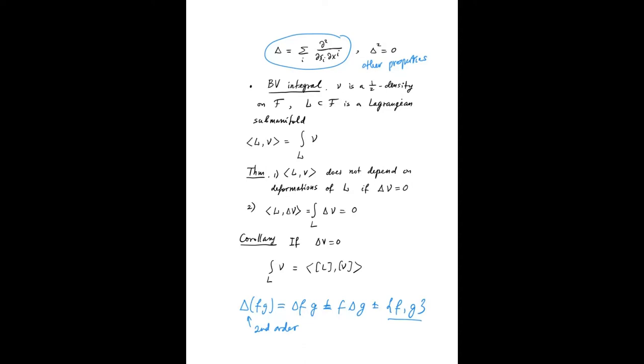Now the definition of the BV integral. Let ν be a half density on F, and L be a Lagrangian submanifold in F. Let's define this integral of ν over L. Remember that ν is a half density on F, and that means ν restricted to L is a density. So we can integrate ν over L.